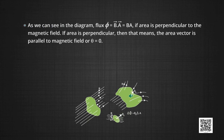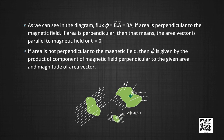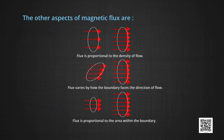As can be seen in the diagram, flux Φ = B · A = B A when the area is perpendicular to the magnetic field, meaning the area vector is parallel to the magnetic field, i.e., θ = 0 and cos 0 = 1. If the area is not perpendicular, then Φ is given by the product of the component of the magnetic field perpendicular to the given area and the magnitude of the area vector. Flux is proportional to the number of magnetic lines of force through a unit perpendicular area — that is, the strength of the magnetic field. Flux also varies with the angle between B⃗ and A⃗, and is proportional to the area.